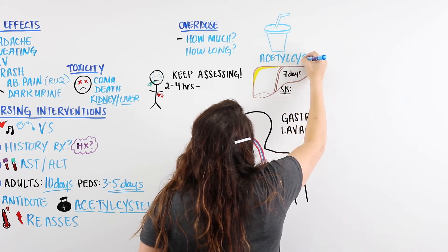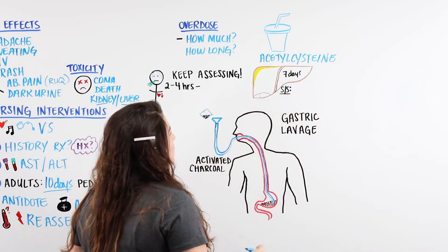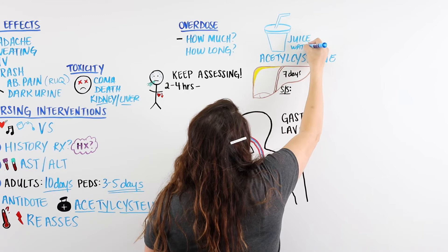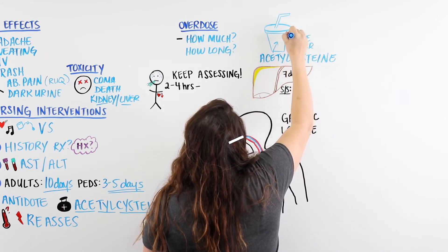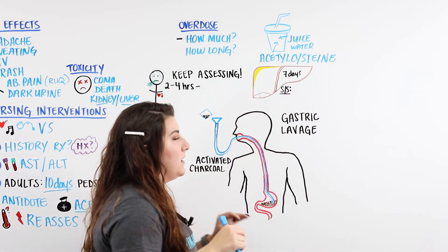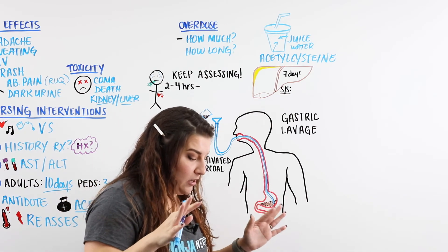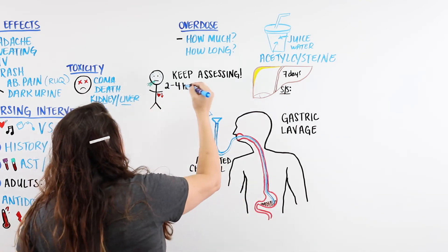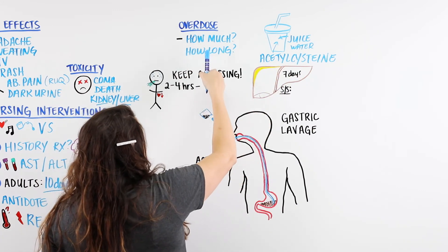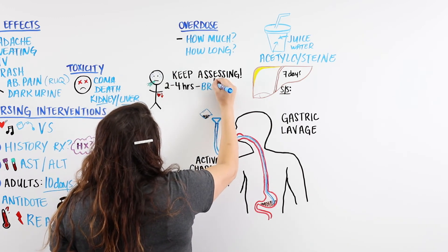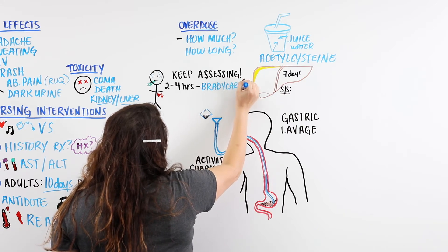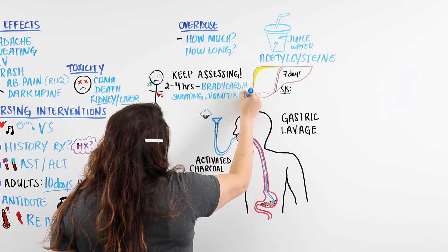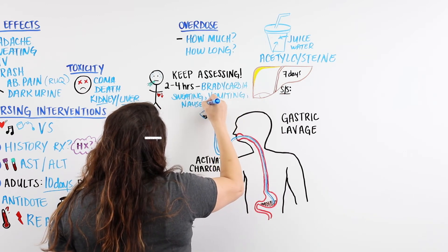If the patient is able to sit up and drink, you're going to give them acetylcysteine mixed in juice or water. Tell the patient to drink it at a comfortable pace — don't chug it, because we don't want them vomiting. In the two to four hours after ingestion, we're going to be looking for signs like bradycardia and sweating.